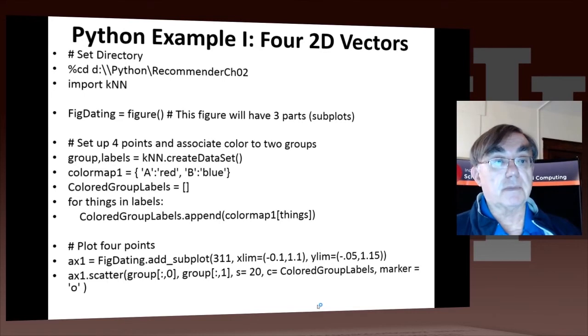Now we actually run some Python code, which is shown here. We will just do that, but let's go through this initial Python. We, as always, set the correct directory where these files exist, and that will depend, of course, on your implementation. It's for me on the D disk in the directory Python slash recommender chapter two. Then we have the import command for the KNN file. We set up a figure. This figure will actually have three subplots, as you'll soon see.